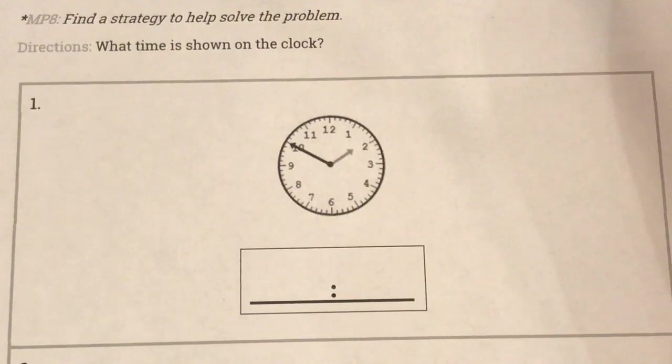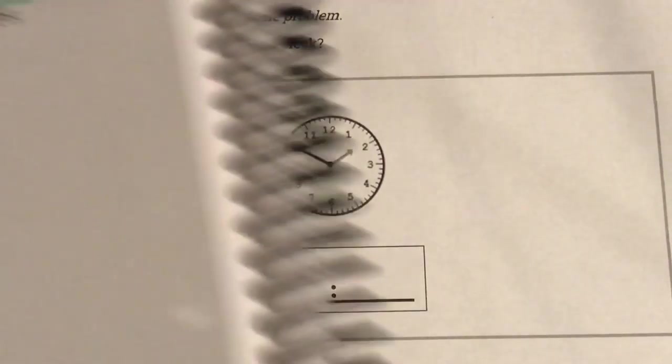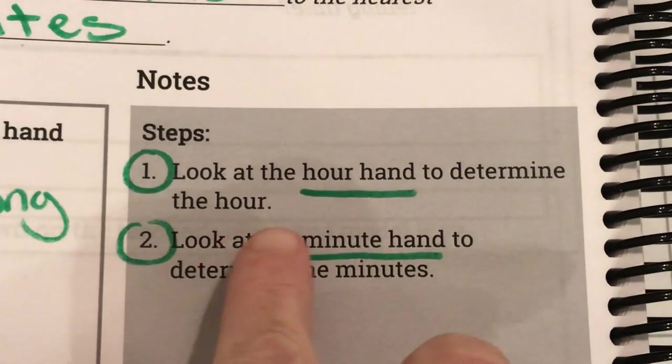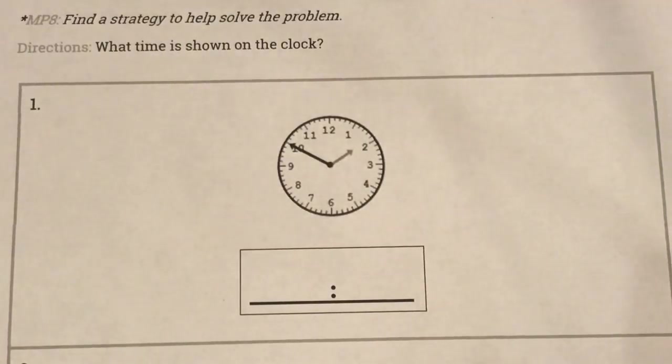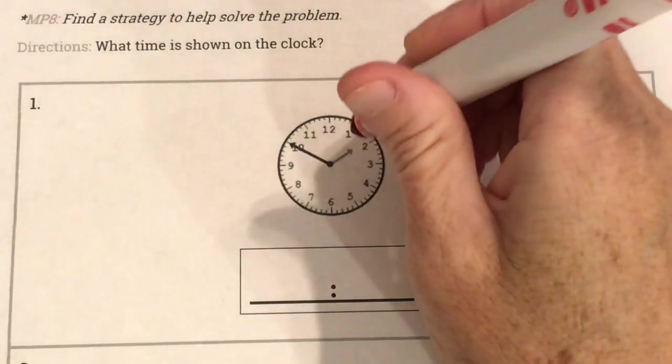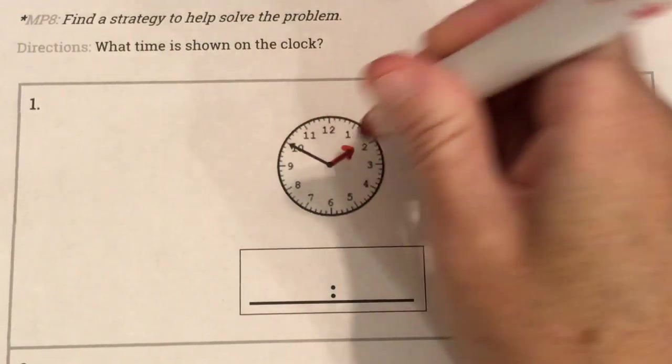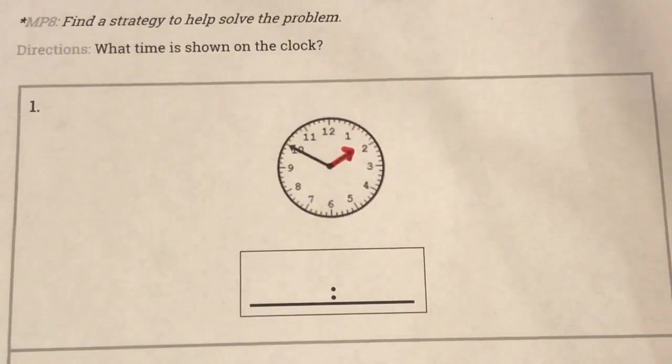So I always want to, as my steps told me, my steps say look at the hour hand first. So the hour hand I know is my short hand. So that's my hour hand. Okay so what do I see about my hour hand?